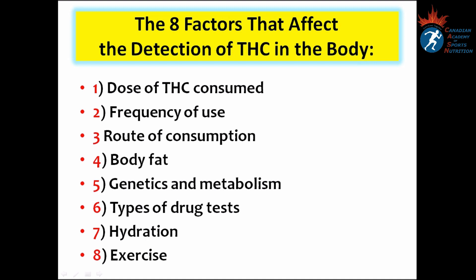Factors that affect the detection of THC in the body: number one, dose of THC consumed; number two, frequency of use; number three, route of consumption; number four, body fat — THC is highly lipid soluble and will be rapidly taken up by fat tissues where it accumulates, so people with a high percentage of body fat should keep in mind that THC can stay in their bodies for a long period of time; number five, genetics and metabolism; number six, types of drug tests; number seven, hydration; number eight, exercise.